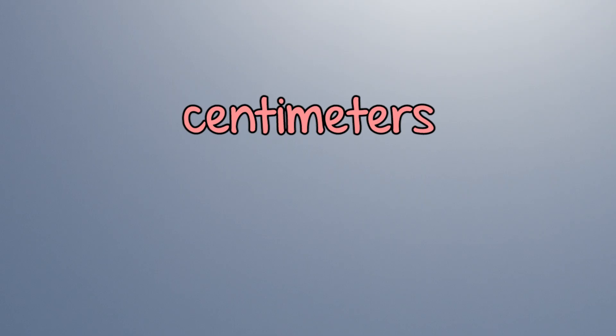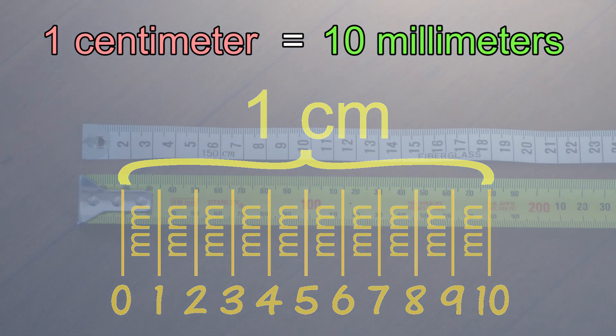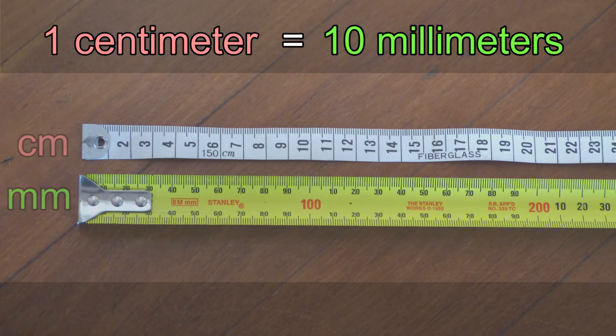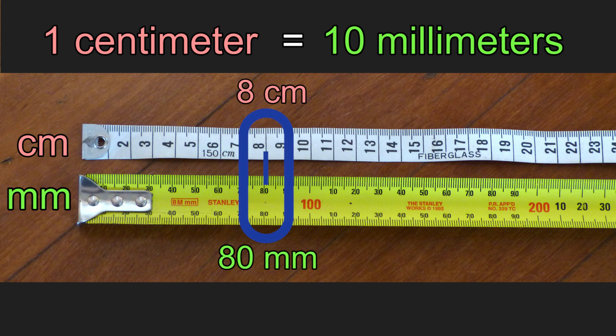One centimeter is 10 millimeters. The CM means centimeters. 8 centimeters is 80 millimeters.